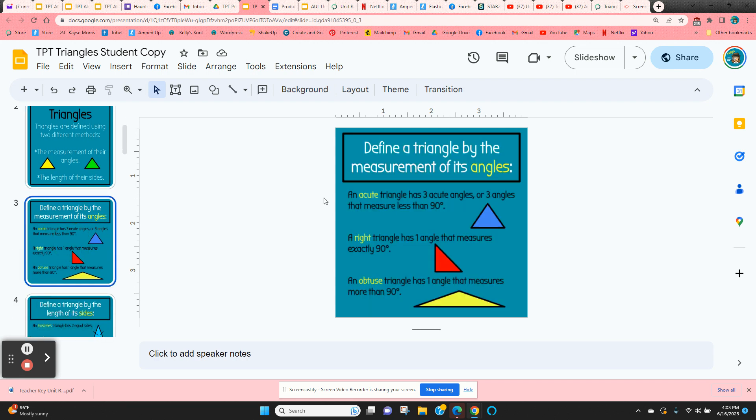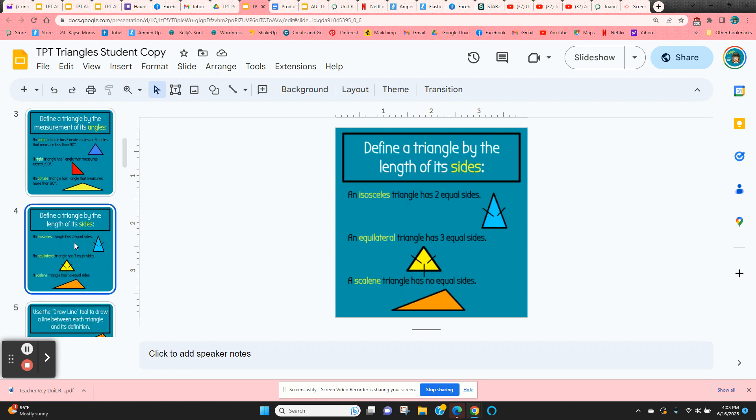If we define them by the measurement of their angles, they have a definition of an acute, a right, and an obtuse triangle. If we designate them by the length of their sides, then we have isosceles, equilateral, and scalene.